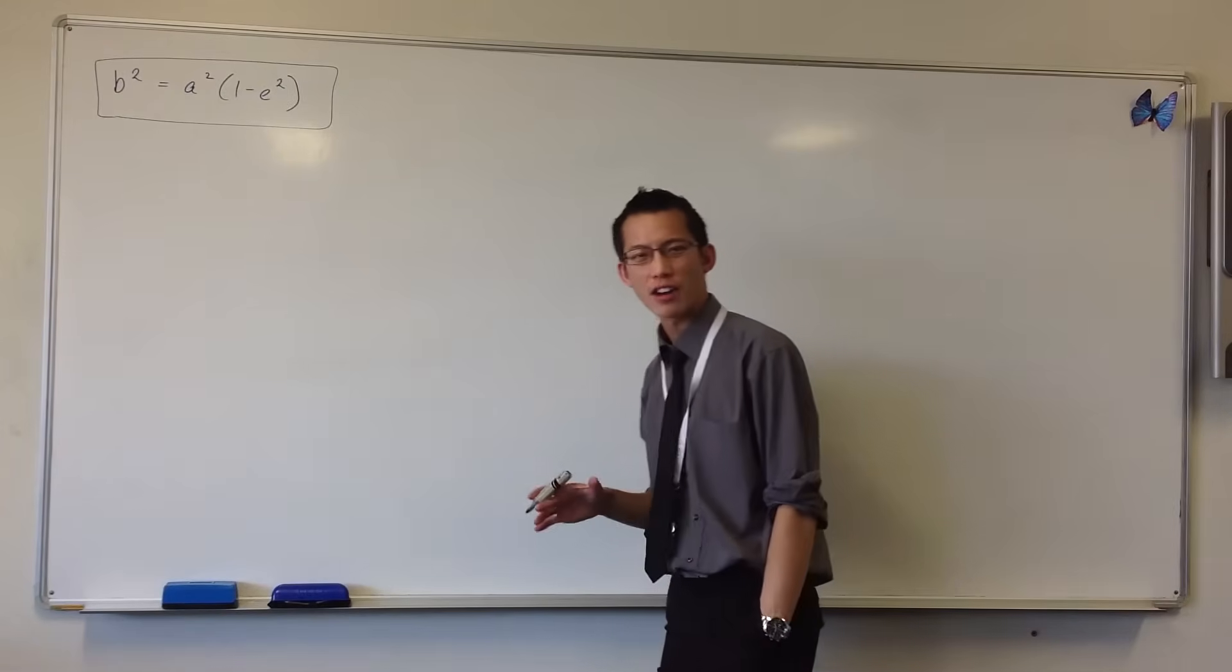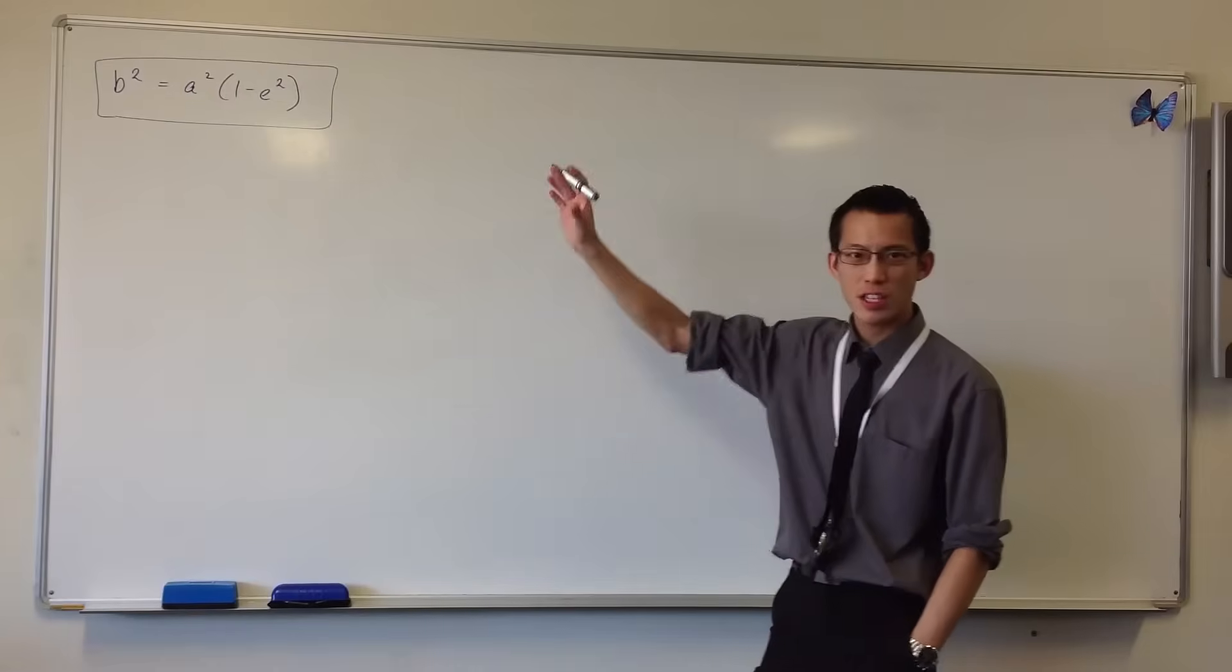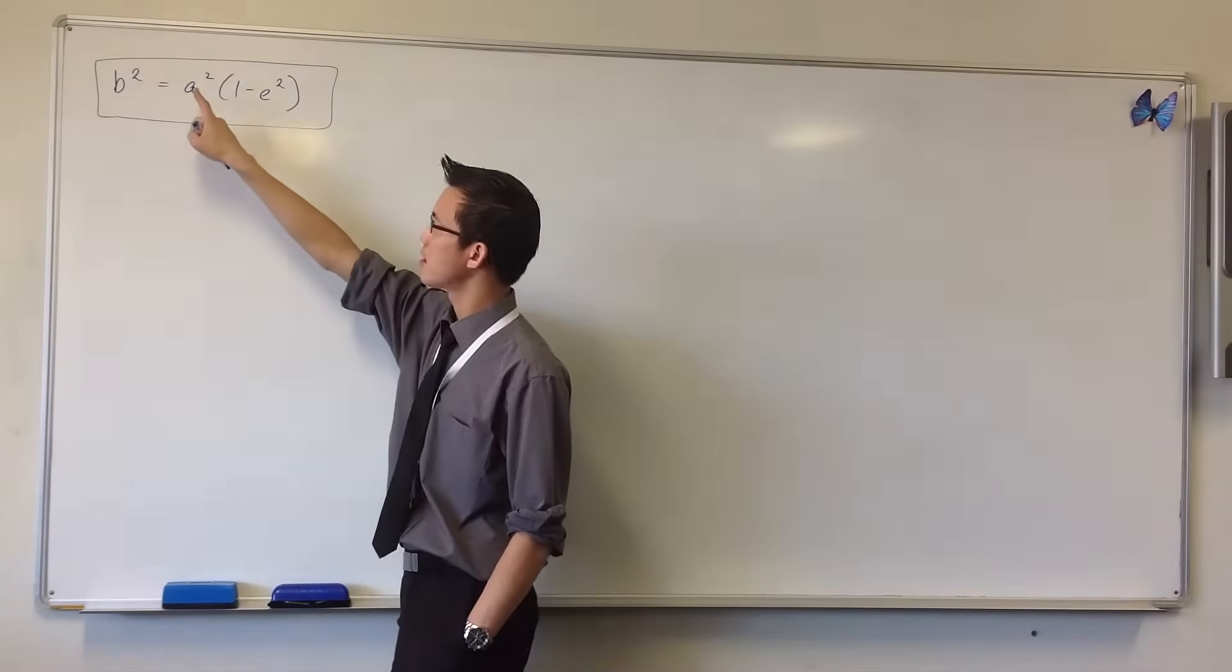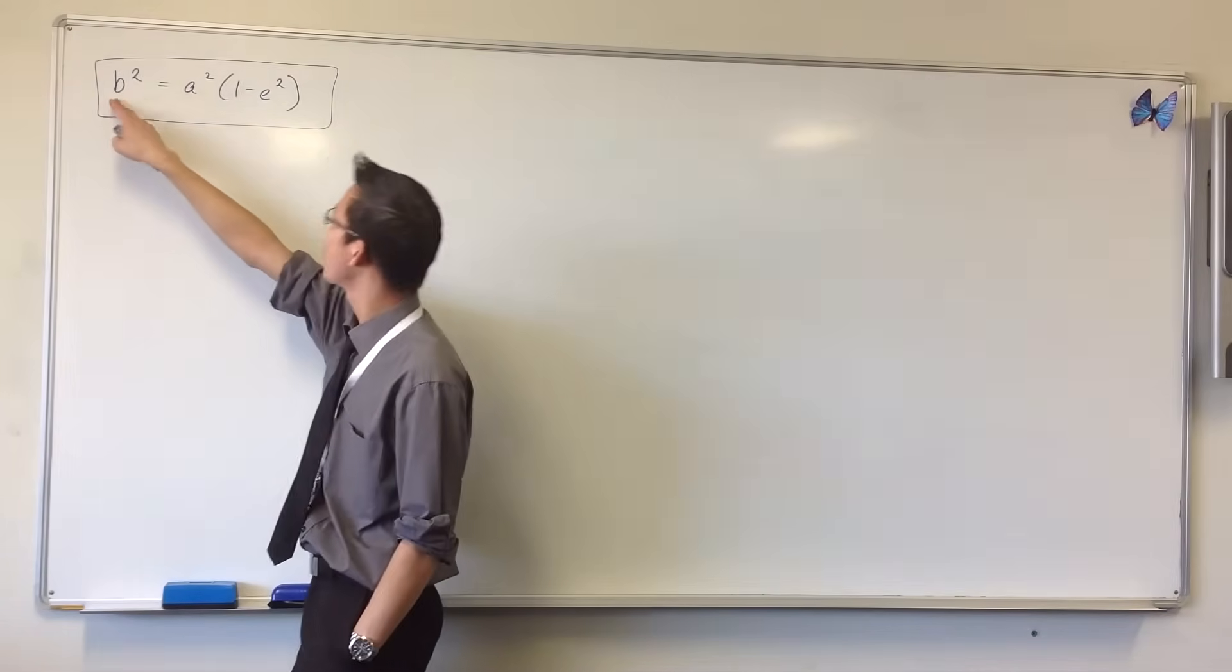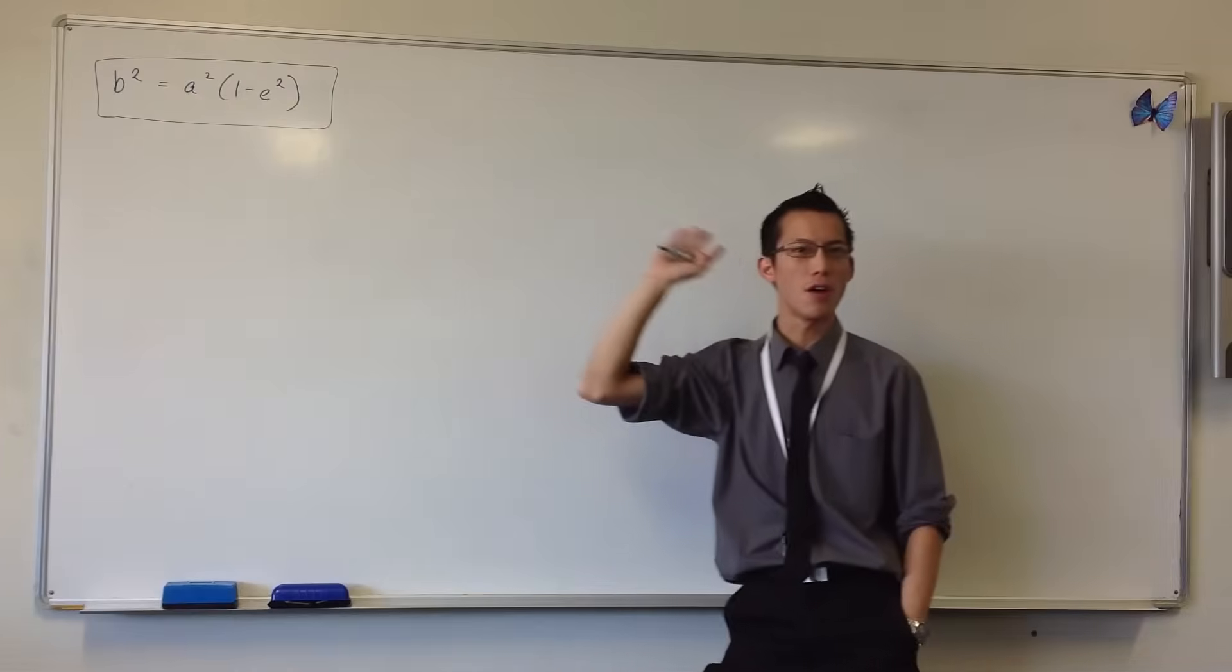Okay, so last time we did a lot of algebraic work to establish this relationship between the semi-major axis, the semi-minor axis, and the eccentricity of the ellipse.